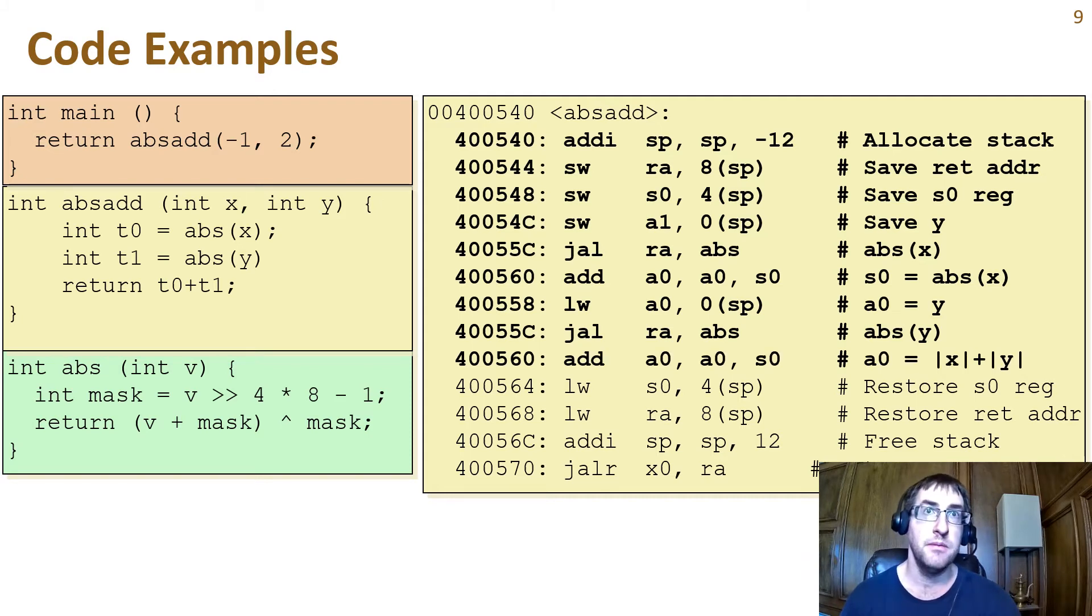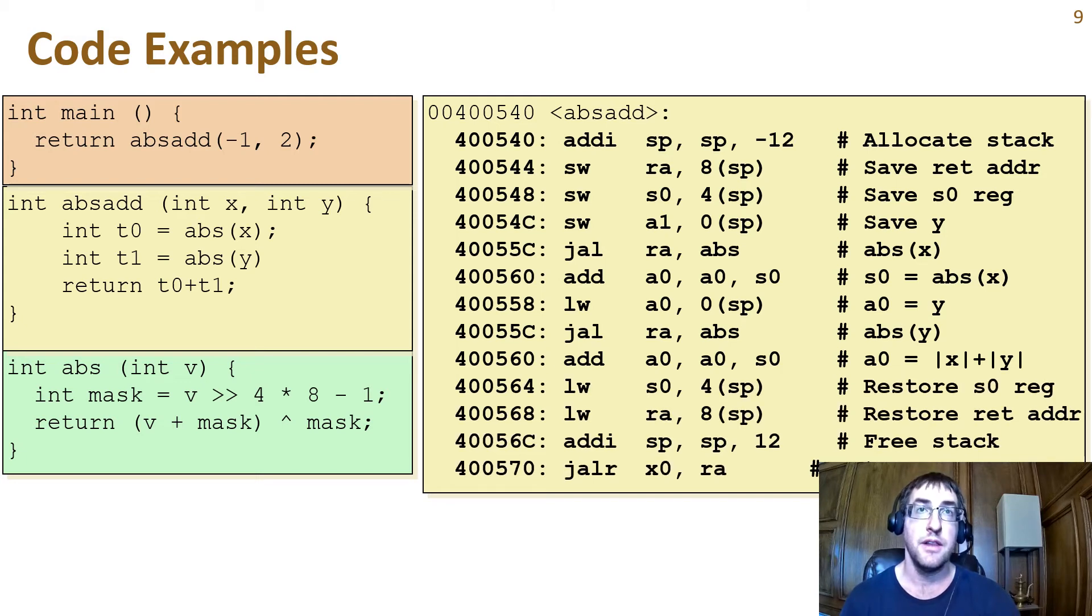So we add them together, putting the result into a0 for the return value. The last four instructions restore the value of the callee saved register s0 and the return address from the stack, adjust the stack back to its original value, and return to the caller.